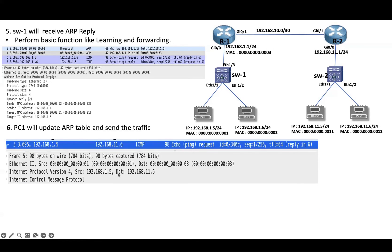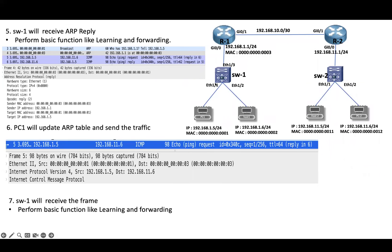In the capture: source IP is PC1's IP, destination IP is PC2's IP, source MAC is PC1's MAC, destination MAC is the default gateway MAC, and we are sending ICMP traffic. Switch1 receives the frame on Ethernet 1/1 and forwards it out of Ethernet 1/3 based on the destination MAC address of the received frame.